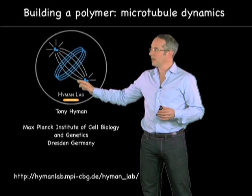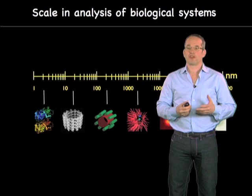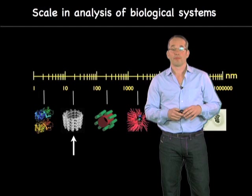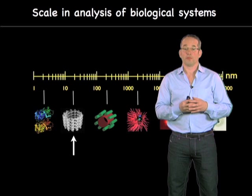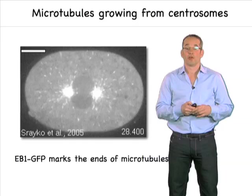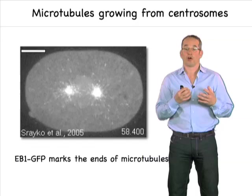If you remember in the last talk, when we were discussing about scale in biological analysis, microtubules are organizations of protein molecules called tubulin, shown here. And tubulin molecules come together to organize these microtubule polymers. You can look at microtubules growing in cells, and in this movie you can see the ends of microtubules growing throughout our C. elegans embryo. The ends of the microtubules are marked with a protein called EB1, which is known to follow and recognize only the beginnings of microtubules growing from centrosomes.